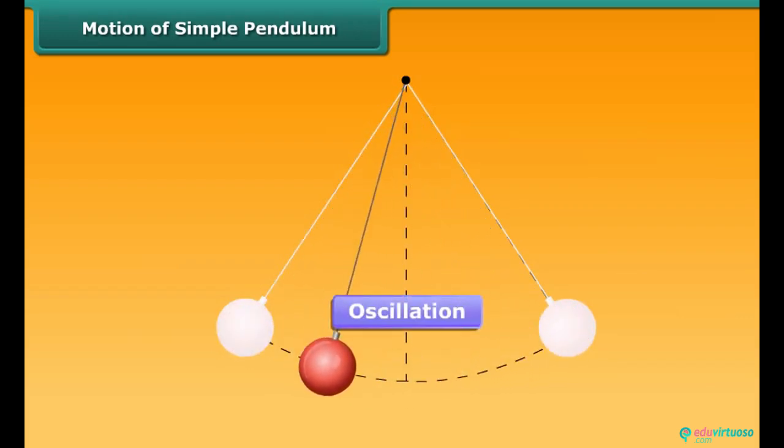The pendulum completes one oscillation when its bob, starting from its equilibrium position O, moves to one extreme position A, from there to the other extreme position B, and then back to O. Alternatively, an oscillation can also be measured as the movement of the bob of a pendulum from one extreme position A to the other extreme position B and back to A.